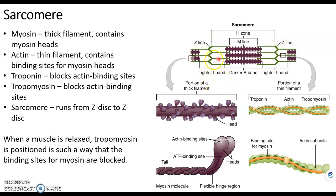Recall that on either side of the Z line that span is the light band or I-band. The length of myosin, which are the thick filaments, that's the dark band. This is just one sarcomere and we can see that actin in green is overlapping myosin in purple.